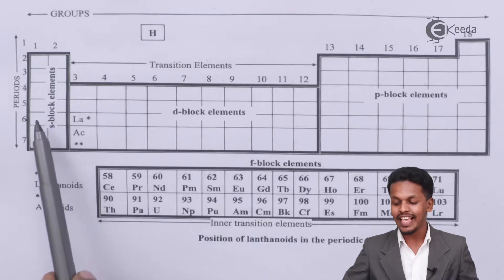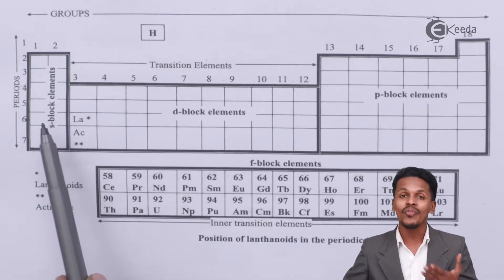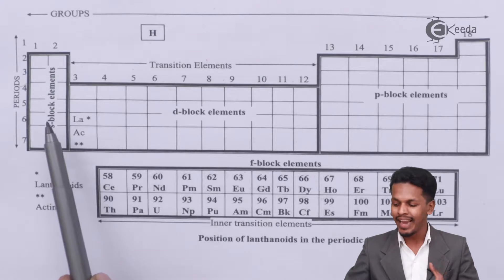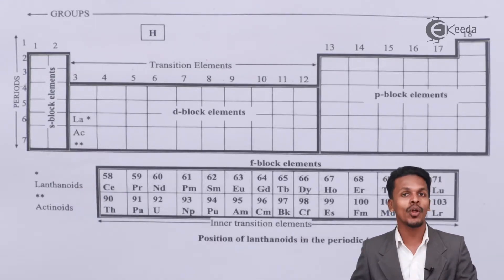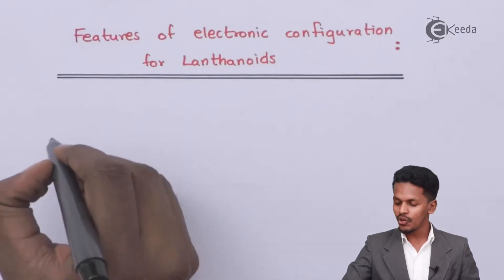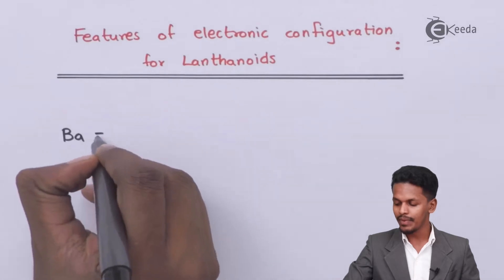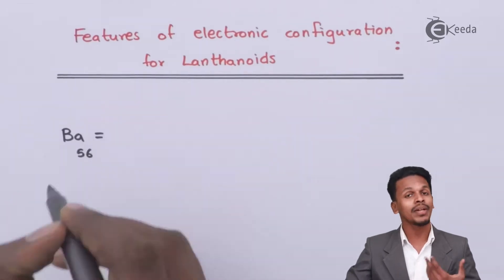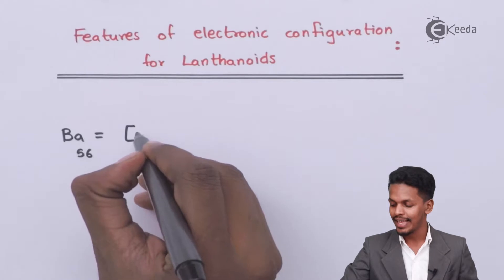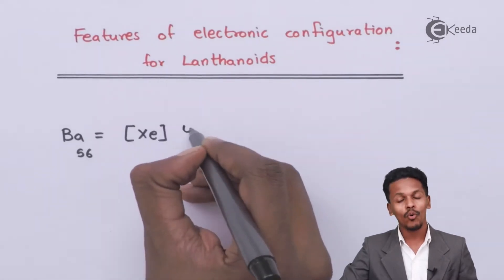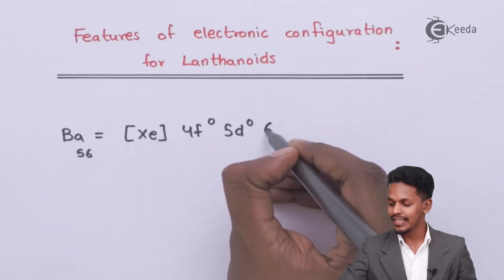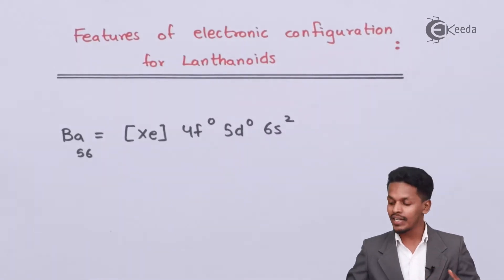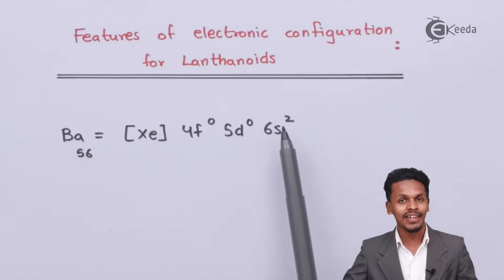Let's take the s-block element barium as a reference. Barium has an atomic number of 56, and we can write its electronic configuration as [Xe] 4f⁰ 5d⁰ 6s². The last electron enters the s orbital, which is why barium is known as an s-block element.